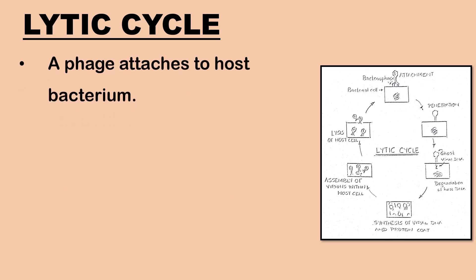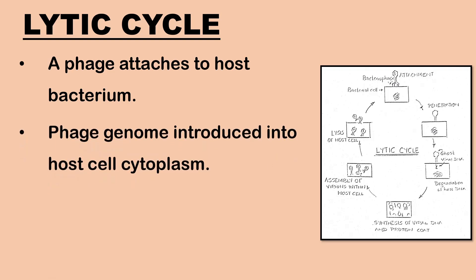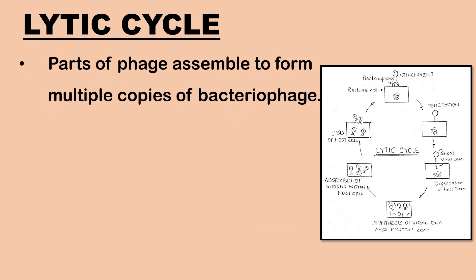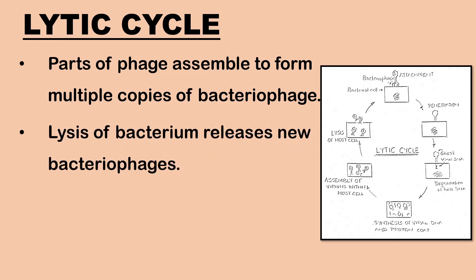To summarize the lytic replication cycle: a phage attaches to a host bacterium; the phage genome is introduced into the host cell cytoplasm; the host cellular machinery is utilized to manufacture capsid proteins, tail proteins, and phage genome; they assemble to form multiple copies of the bacteriophage; and lysis of the infected bacterium takes place, releasing new bacteriophages to infect other host cells.